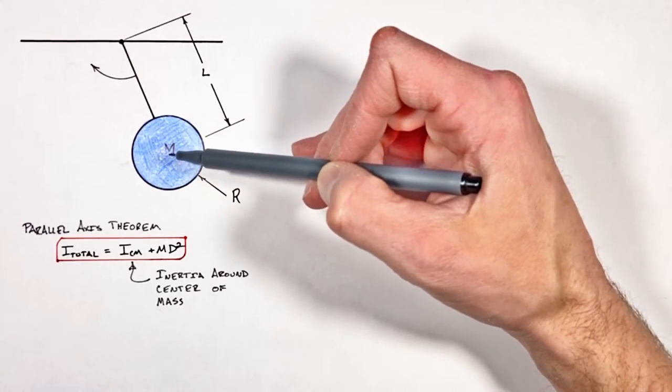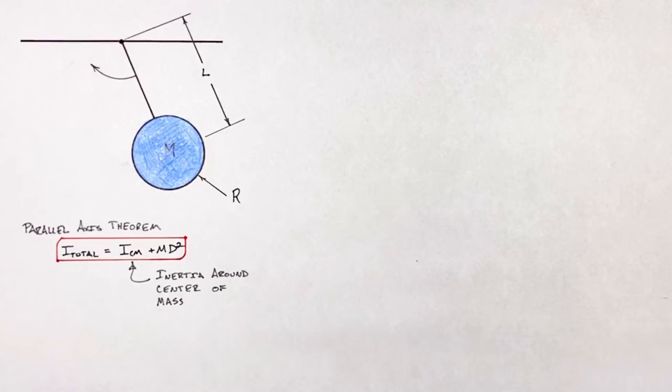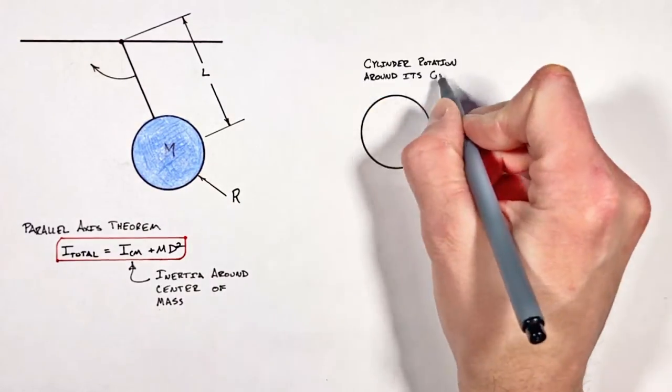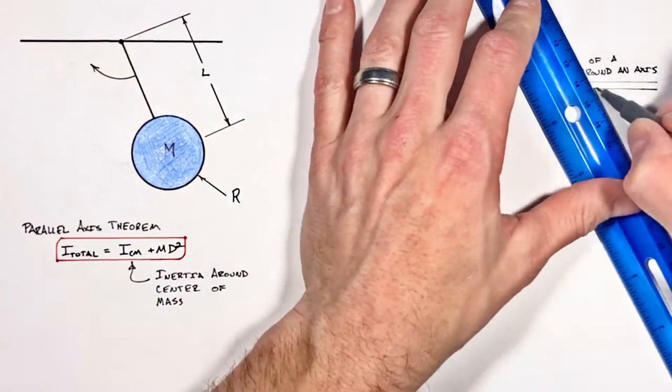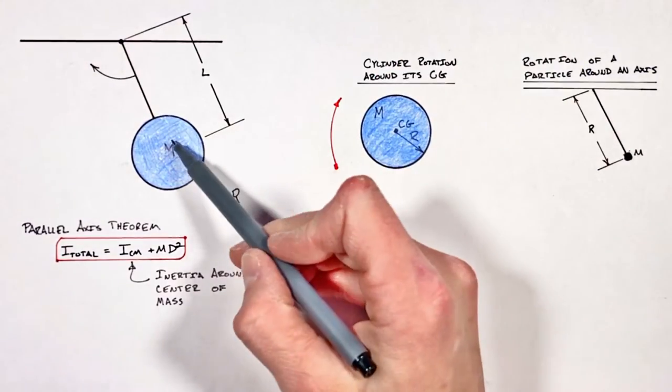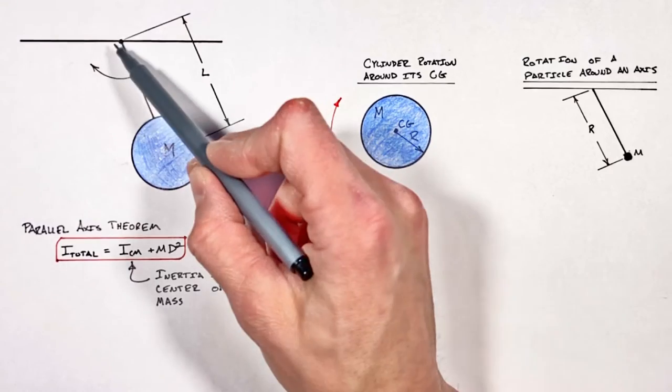and break it up into two separate motions. So we have to view the rotation of this cylinder around this axis up here really as two different rotations.